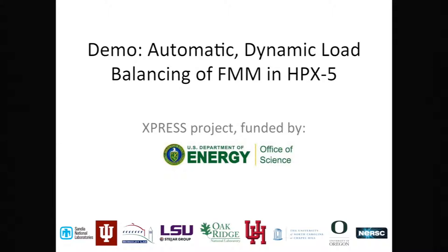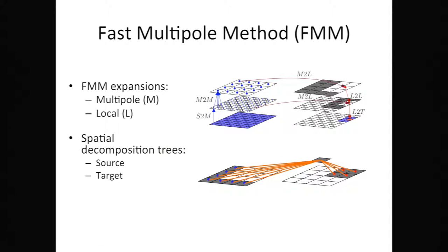The second type, called local expansion, is associated with a cluster of target points and represents the approximate influence from the far away sources. In FMM,